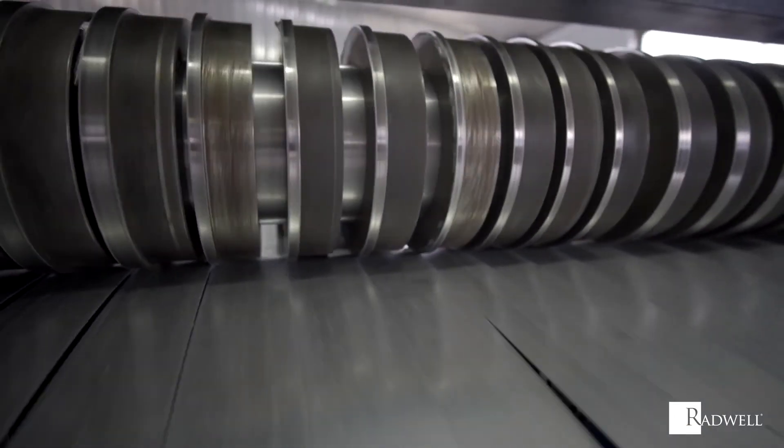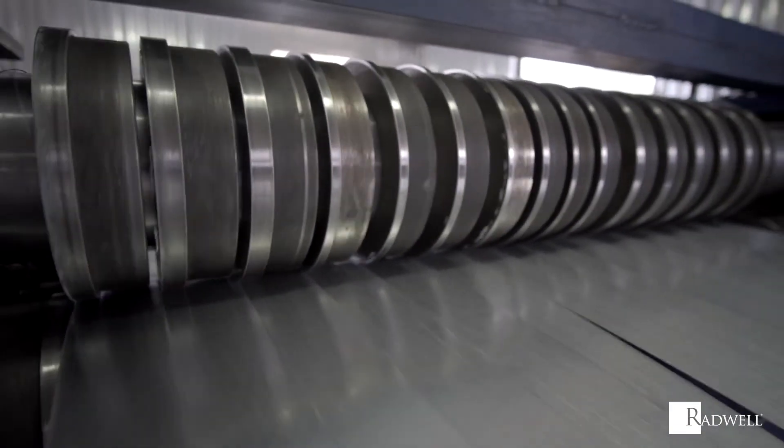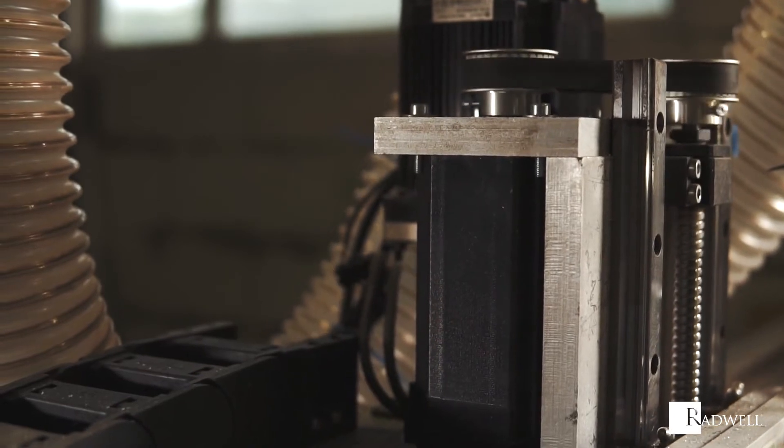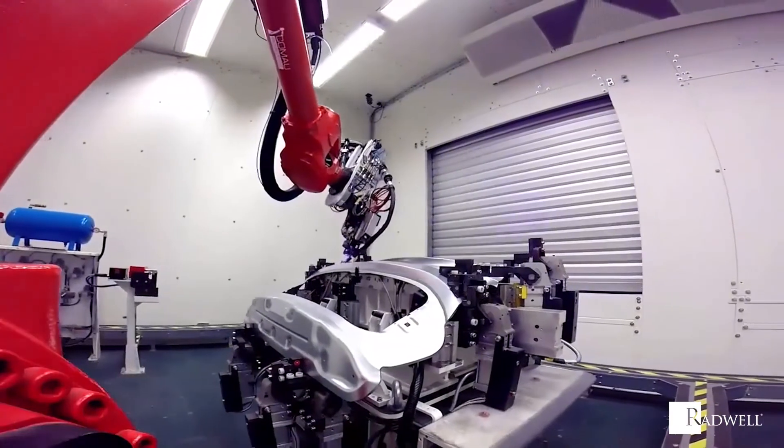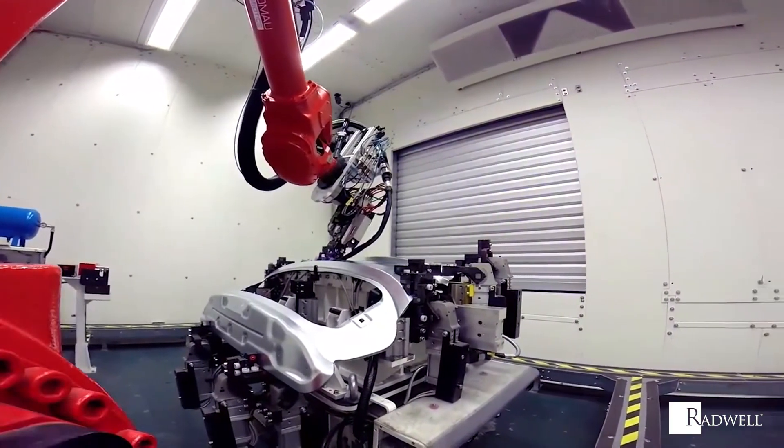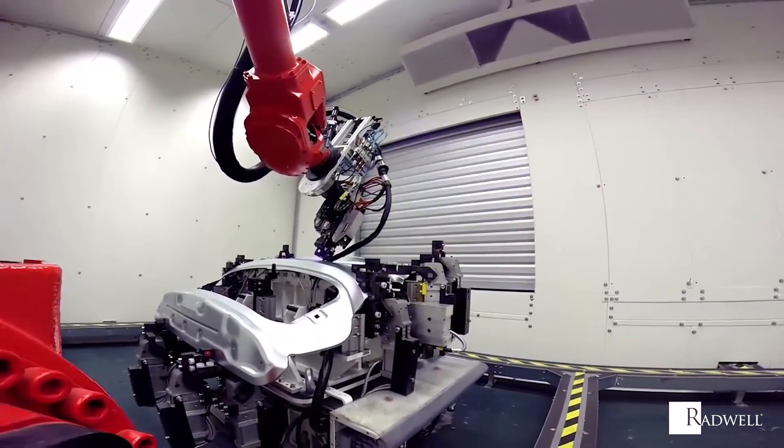There are several advantages to using optical encoders, including higher resolution, higher accuracy, more immunity to electrical noise interference, and they are not affected by surrounding magnetic fields, allowing them to be used with large diameter motors.